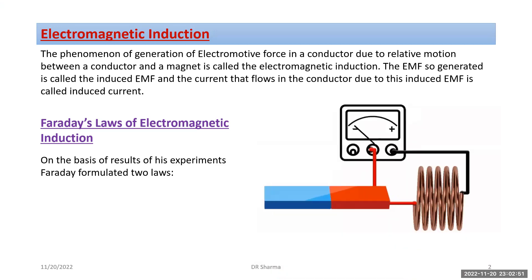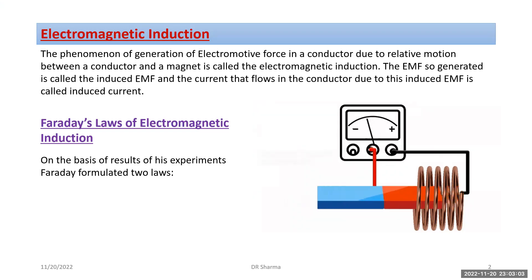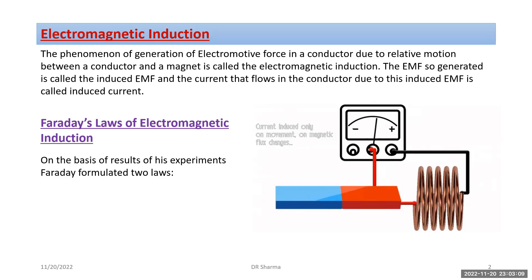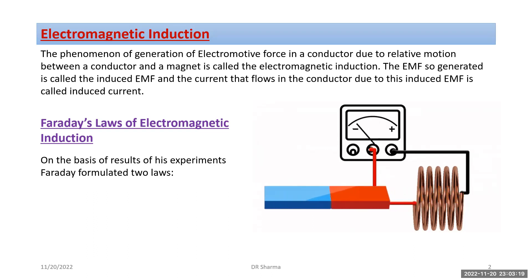Based on the results of his experiments, Faraday formulated two laws on electromagnetic induction. Faraday's first law deals with the cause of electromagnetic induction — how the EMF is induced — and the second law deals with the magnitude of that induced EMF. According to Faraday's first law, whenever there is changing magnetic flux linked with a coil, there is an induced EMF.